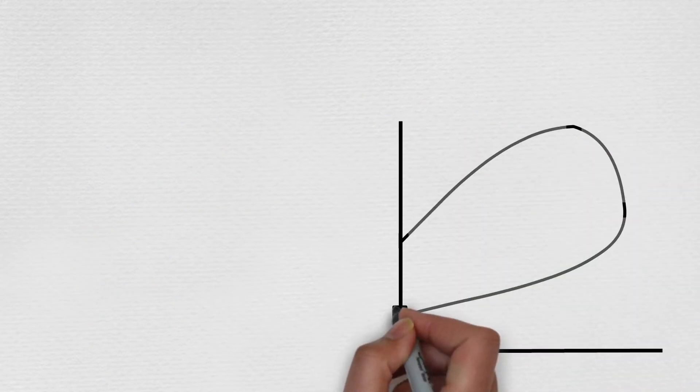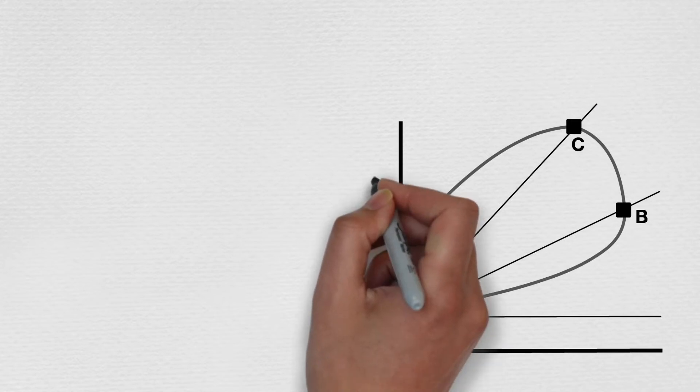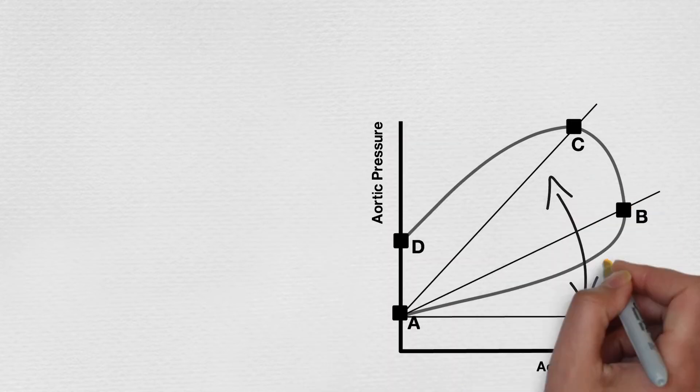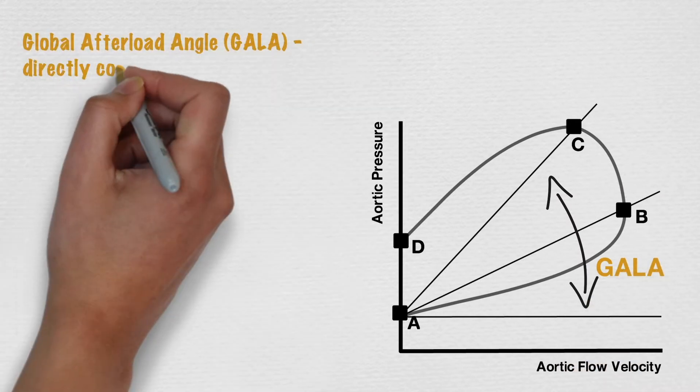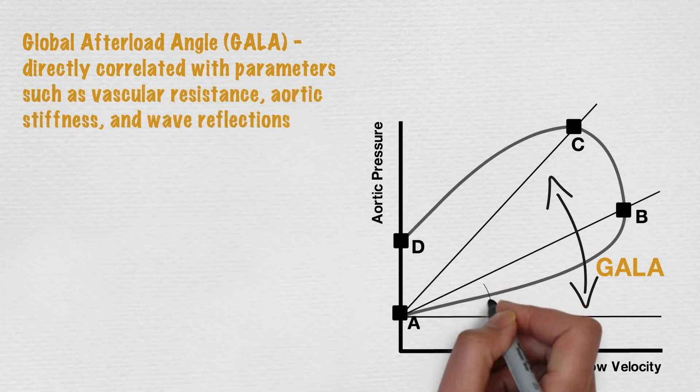Once generated, three different angles can be calculated from the loop. Firstly, the global afterload angle, or GALA. The value and variation of this angle are directly correlated with parameters such as vascular resistance, aortic stiffness, and wave reflections.